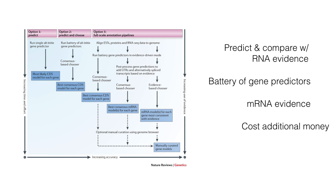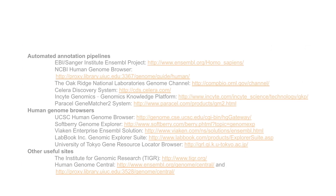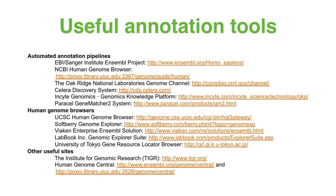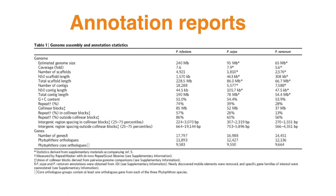Of course, it will cost additional money to get RNA evidence from different tissues in your species. Here you can see a list of useful tools that can be used for annotation of your genome project. This list is by no means exclusive or exhaustive, as genome research is really difficult to keep up with nowadays, with a lot of new information coming every day. Here is an example of an annotation report with genome size, number of repeats, and genes found in three related genomes of the Irish potato famine pathogen Phytophthora.